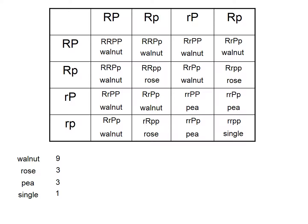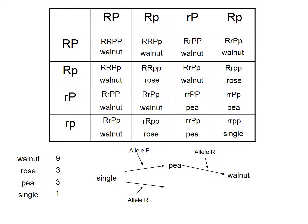In this case, you actually get back to the characteristic 9:3:3:1 ratio. So sometimes in complementary epistasis you will get this typical ratio again. The default phenotype is single. If you've got the allele P, you get the P-shaped comb. If you've also got the allele R, you go to walnut. If allele R is present but you haven't got dominant P, you get rose. But if you then have dominant P present as well, it's walnut. The way to remember it: if you've got P, you get P-shape; if you get R, you get rose; if you get both, you get walnut — they're complementing each other in epistasis to give the walnut phenotype.